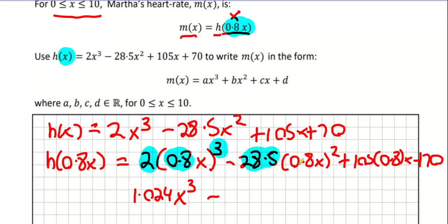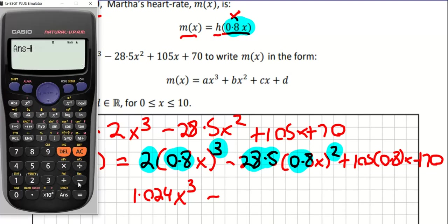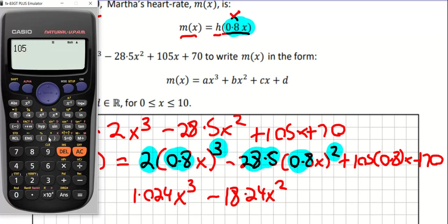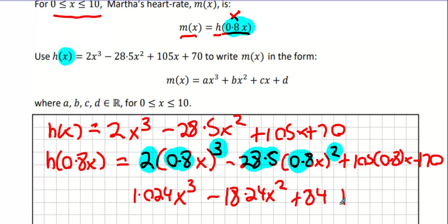The next part we're going to highlight this part here, the 0.8 and the squared. So we're going to get minus 28.5 times 0.8 squared which is minus 18.24x squared. Then we're going to get 105 times 0.8 and what we get here is 84x plus 70. And there, long and behold, this is M of X because M of X is H of 0.8X. So we have our A, B, C, D result and we've written it in the form required. And that's the end of that question. That took 20 minutes. It was a very difficult question, question 7.